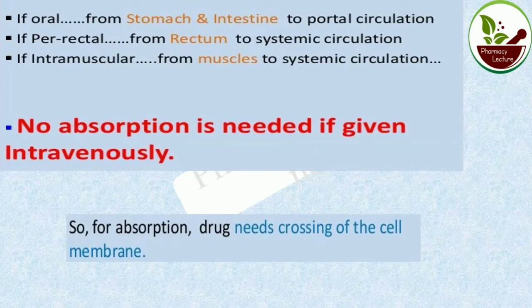If oral, drug goes from the stomach and intestine to the portal circulation, then systemic circulation. If rectal, from the rectum it reaches systemic circulation. For intramuscular, from the muscle to systemic circulation. But in case of intravenous, there is no absorption needed — it directly reaches systemic circulation. For absorption, the drug needs to cross the cell membrane.